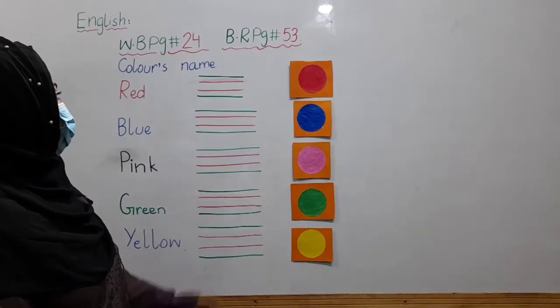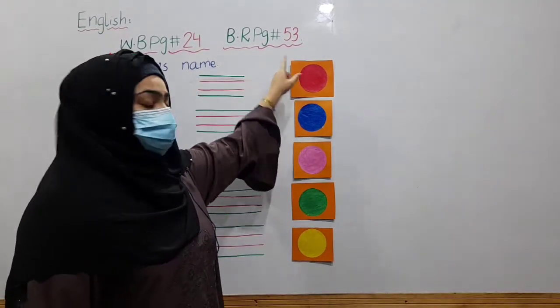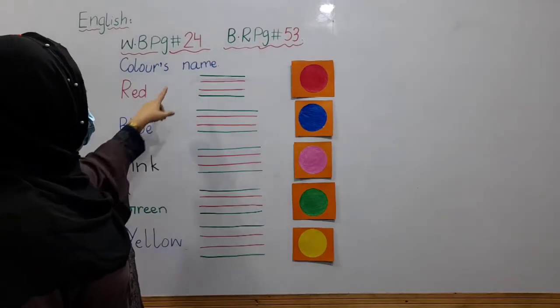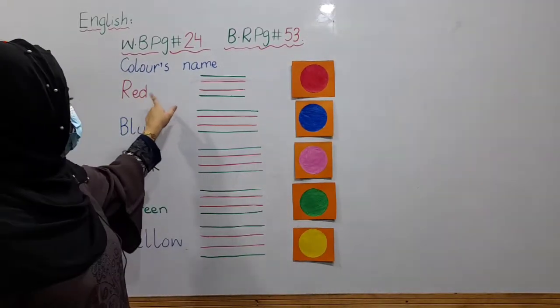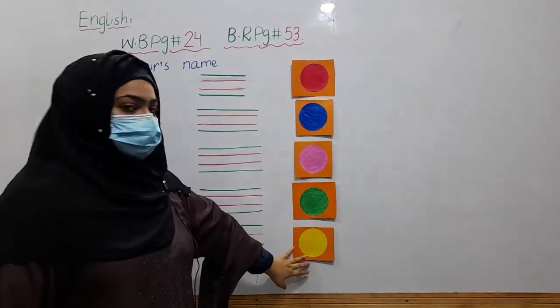Students, our students' work is English. Workbook page number 24. Book reading page number 53. On page number 24, there is colors name. Colors name. Today, we will recognize about colors.